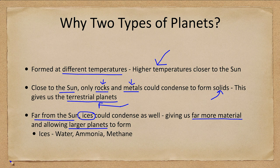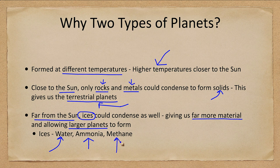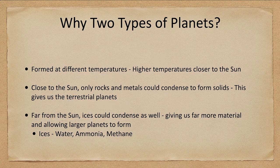When I say ices, I want to specify what we mean. A lot of the ice is water ice, but we also mean things like ammonia, which is nitrogen and hydrogen, and methane, which is carbon and hydrogen combined. These are all different ices that we will see especially in the outer portions of the solar system.